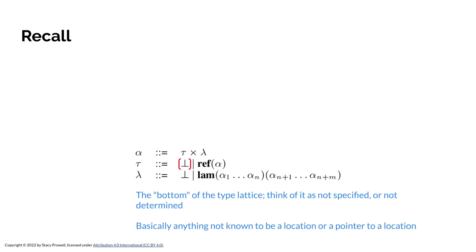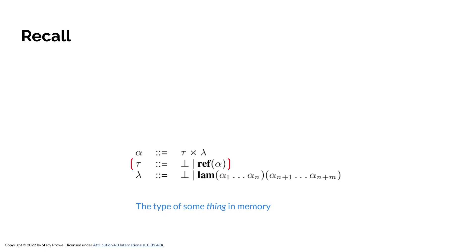Recall Steensgaard's notation. He defined a type lattice, and the bracketed symbol in red is the bottom of that type lattice. You can think of it as bottom, unspecified, or primitive — basically it's where the recursion ends. That's what that represents.